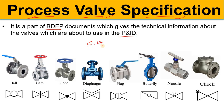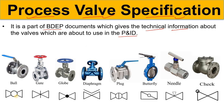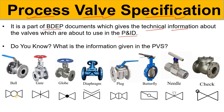For example, if there is a cooling water line and you are using a gate valve, that gate valve will have some technical specification. If you are using a steam line and using a globe valve or piston valve, then that piston valve will have some technical specification. That technical information is given in the Process Valve Specification by the process engineer to the piping department. So the question arises: what information is given in the Process Valve Specification?